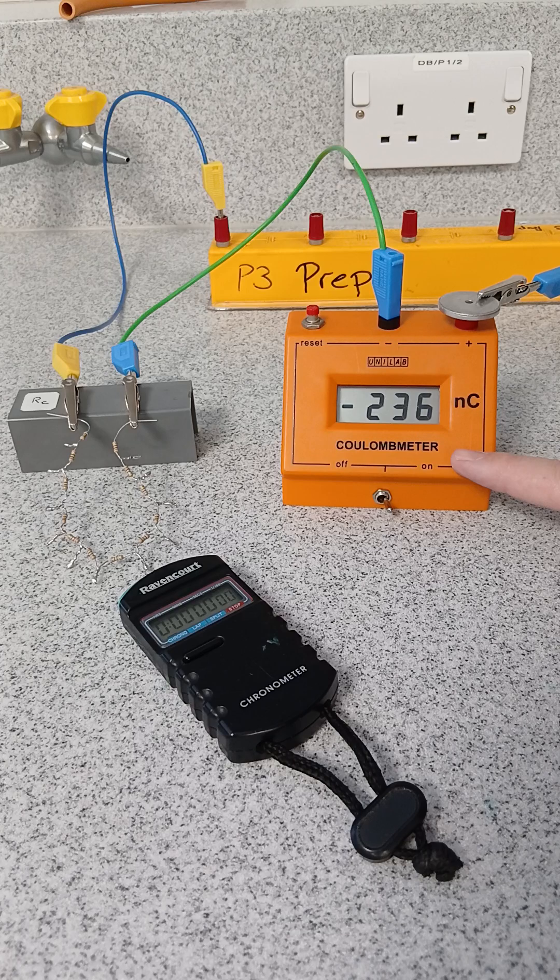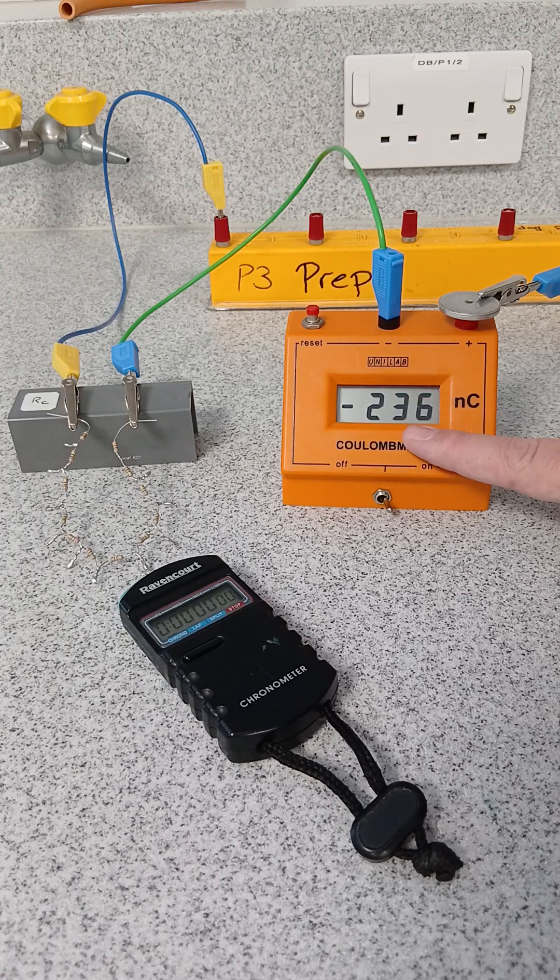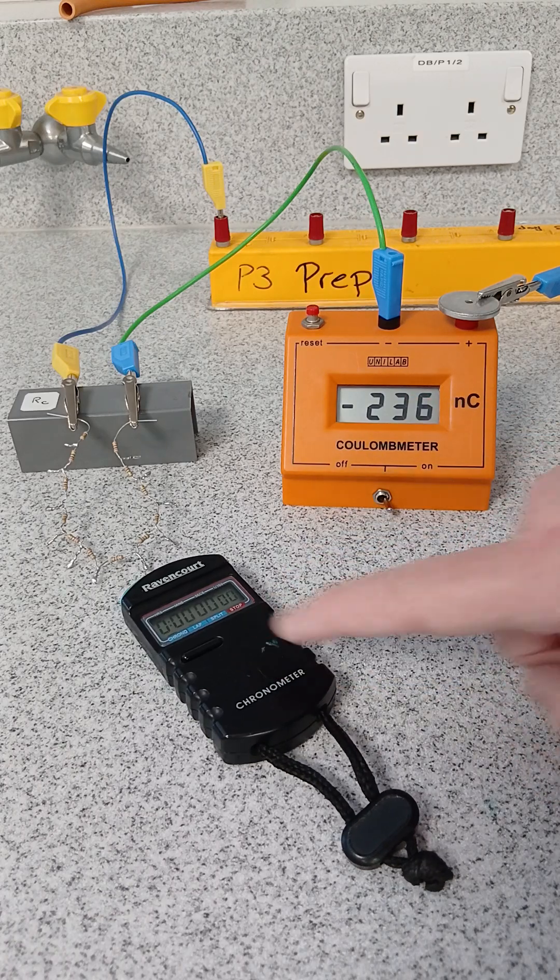And you hopefully have studied Q equals IT, or charge equals current times time, or current is charge divided by time. So you could do charge divided by time to work out the current.